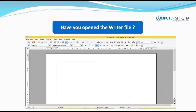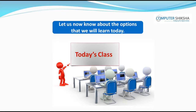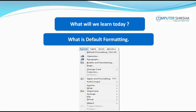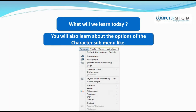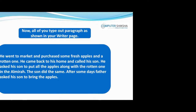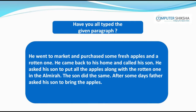Have you opened the writer file? If not, watch the video and learn from it. In today's class, you will learn about the options of the format menu, like what is default formatting. You will also learn about the options of the character submenu, like font name, font effect, and hyperlink. Now, all of you look at the given paragraph and type out the same on your writer page.